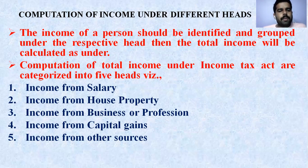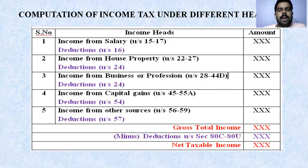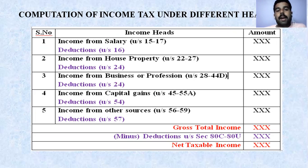Observe these five heads: income from salary, income from house property, income from business or profession, capital gains, and other sources. In the next class we will discuss each head in detail. Here I have taken a small pro forma that you are going to follow while calculating the total income. Income from salary is covered under sections 15 to 17 of the Income Tax Act 1961, and we will get some amount. There are also deductions under section 16 — after deductions, the final net amount will be written in the amount column.